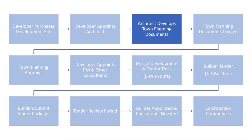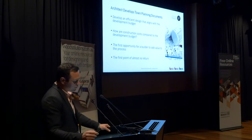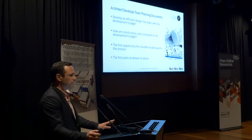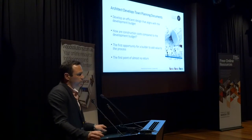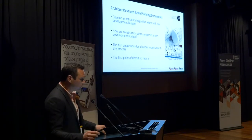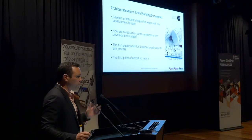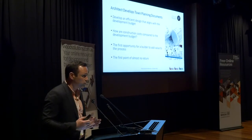The first key stage to hone in on is when the architect develops the town planning documents. The really key component here is to develop an efficient design that aligns with the development budget. Surprisingly, a lot of the time this doesn't happen. If an architect is given the sole responsibility of designing a building to a budget, I believe that's very difficult — especially in the space we're in right now, with prices escalating and resources being an issue. Quantity surveyors are struggling to hone in on how much buildings cost, over-correcting and under-correcting. So if a quantity surveyor is struggling to work out how much a building costs in the real world, how is an architect supposed to do that?